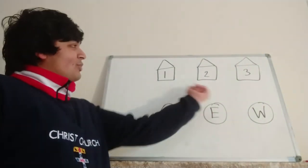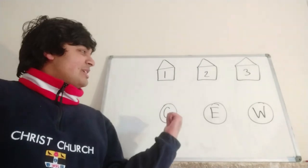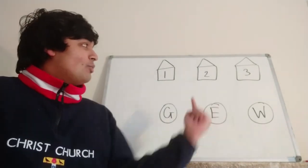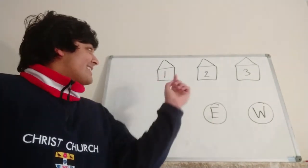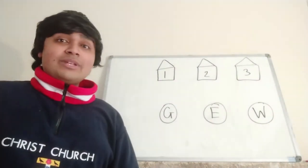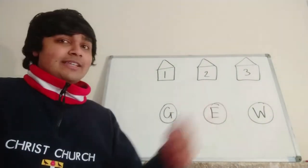So we have three houses: house one, house two, and house three. And we have three utilities: gas, electricity, and water.